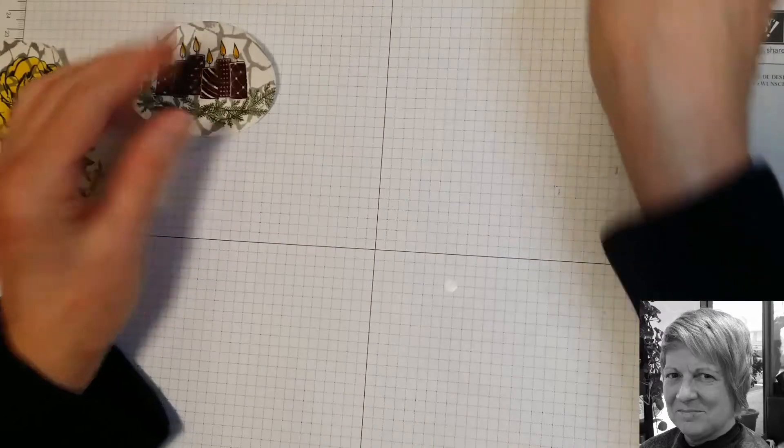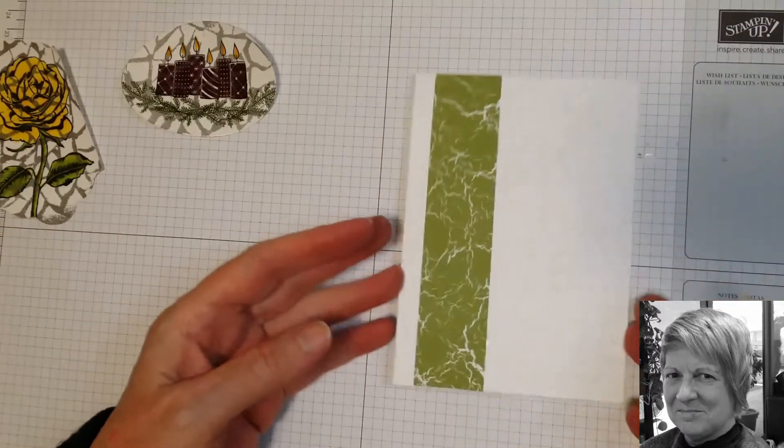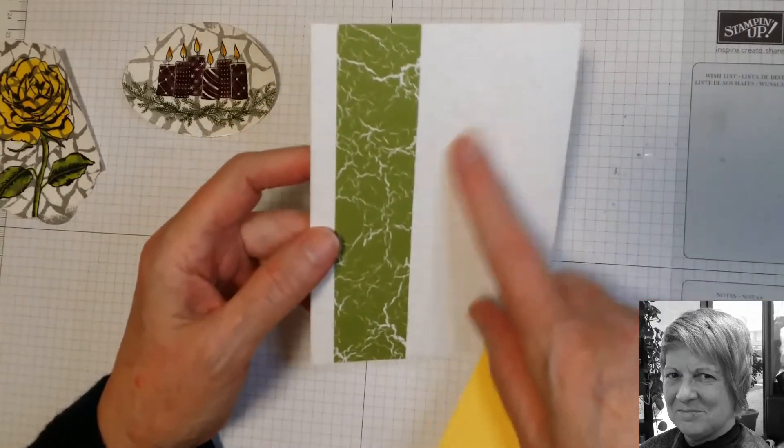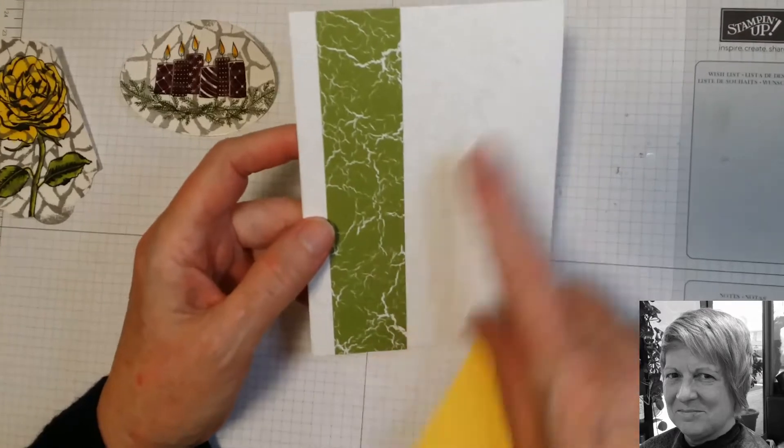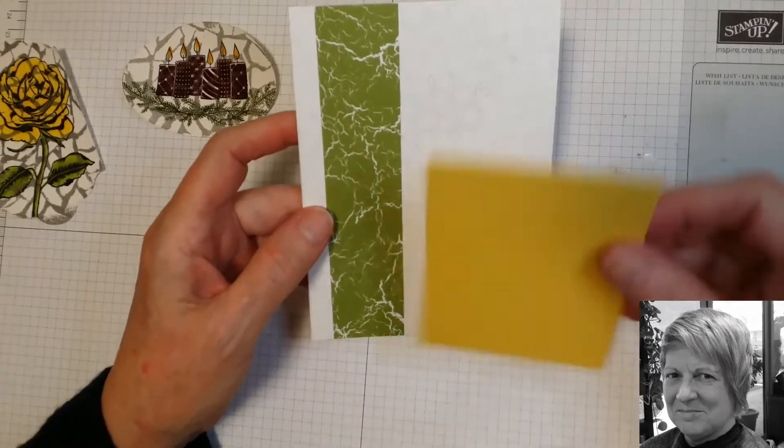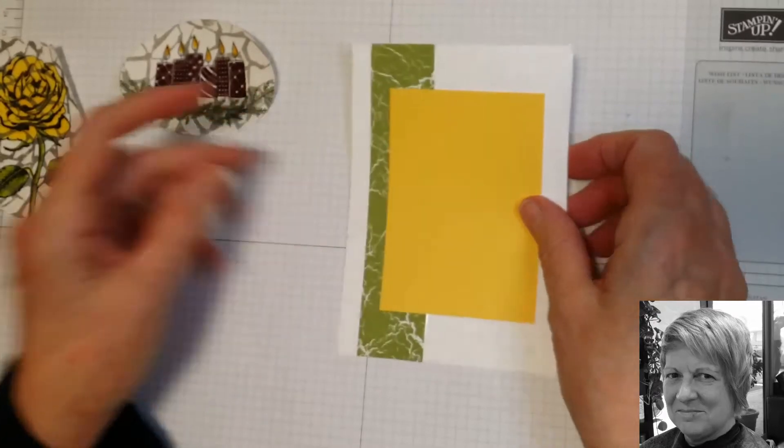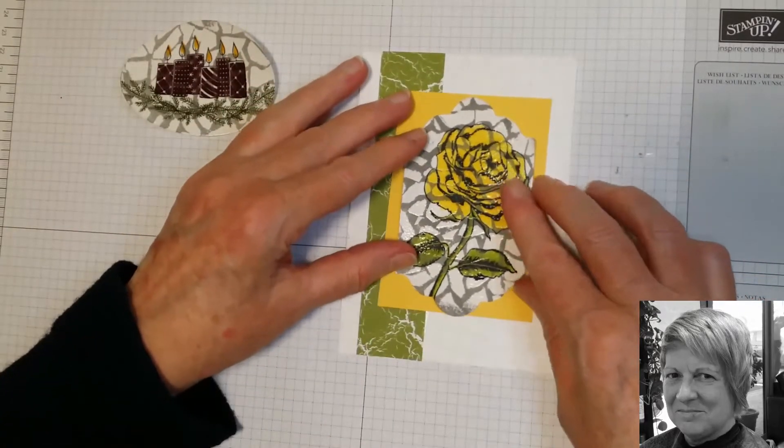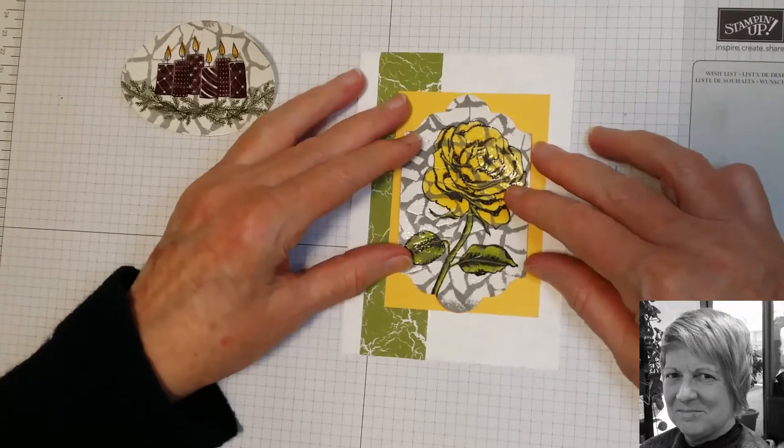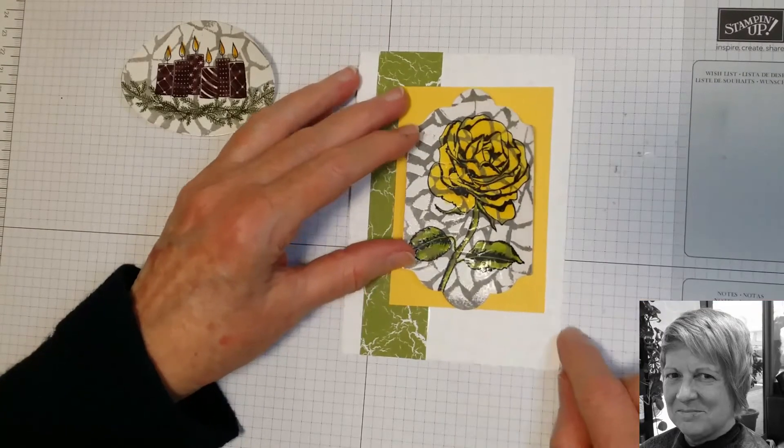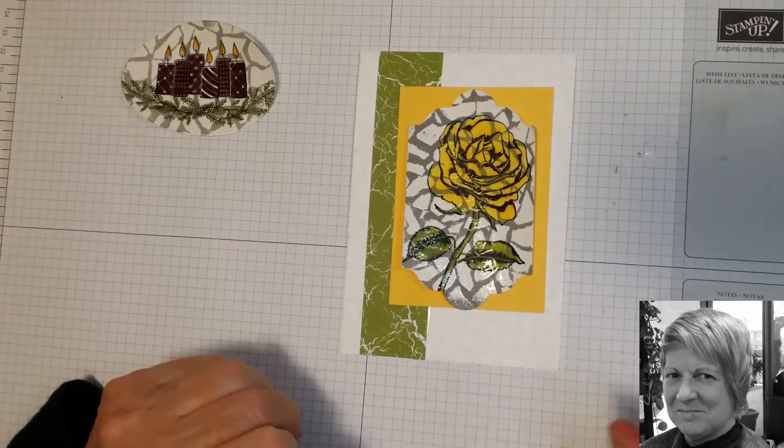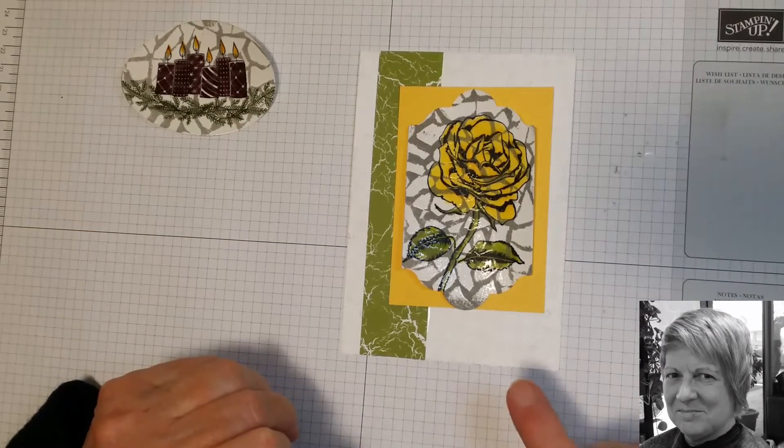Now to put these cards together, I've just got a Whisper White card here. I have stamped it in the Smoky Slate stamped off with a background image, put some of the Color Theory designer paper. I'm going to put a piece of Daffodil Delight, put that on there, and add a sentiment. That will be the finished card which you'll be able to see on my blog, and the link to that post will be under this video.